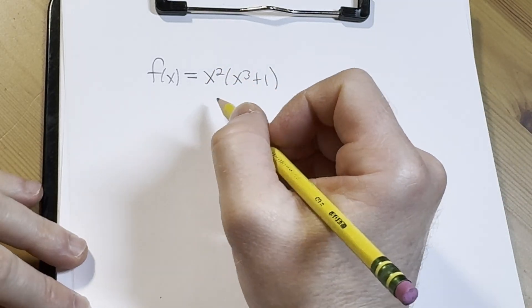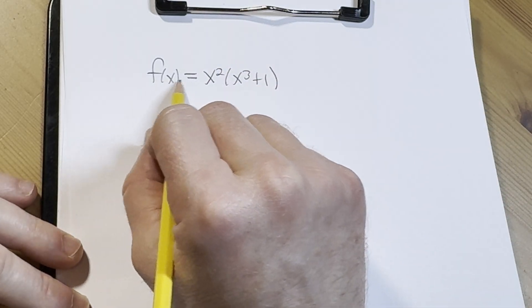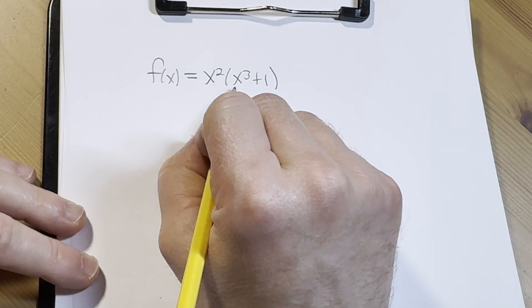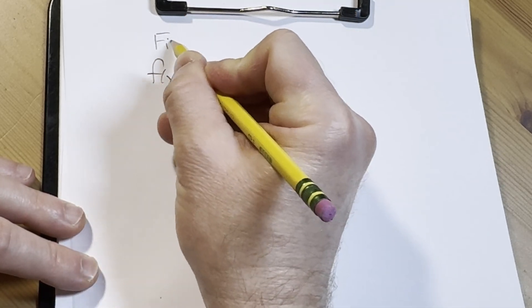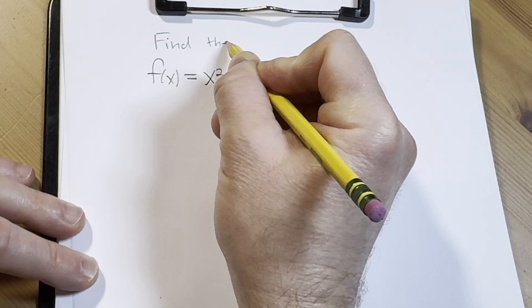Hi, in this video we are going to find the derivative of this function. We have f(x) equals x squared times x cubed plus one, and the question is to find the derivative.